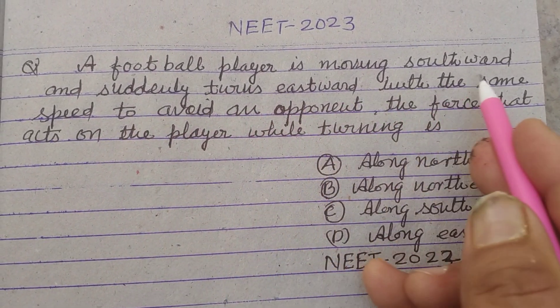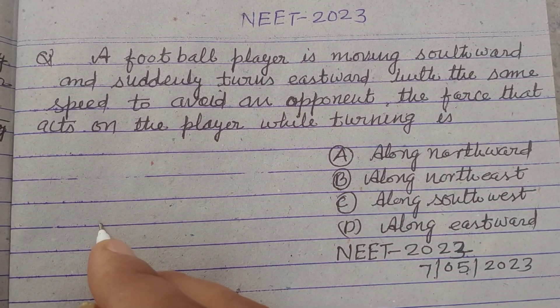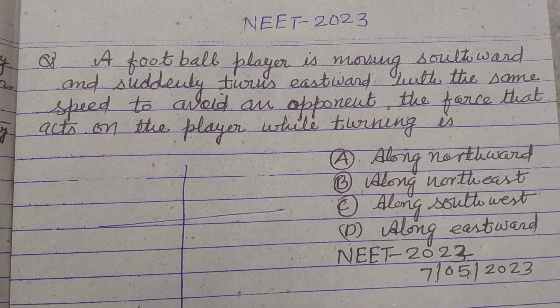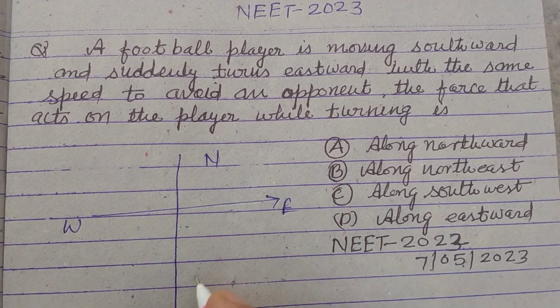A football player is moving southward and suddenly turns eastward. So these are the directions: this is east, west, north, south.